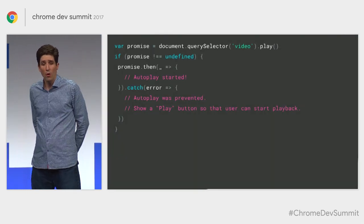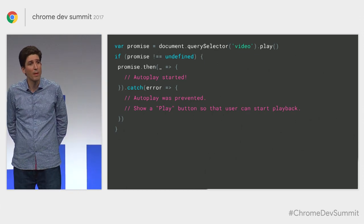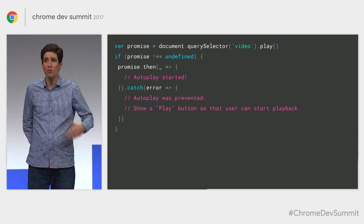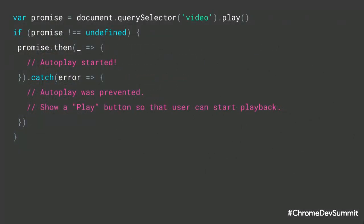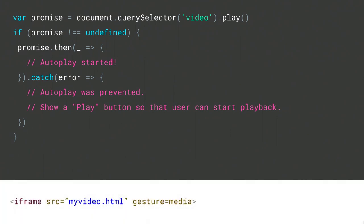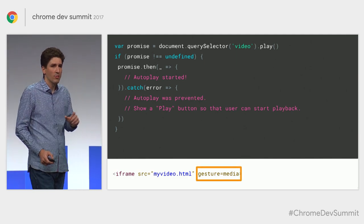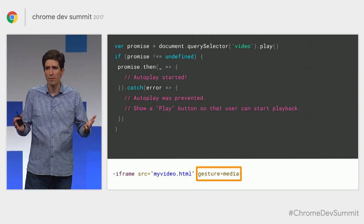In terms of code, to detect whether or not autoplay is allowed, you can do this by checking the play promise after you try to play media with audio. If the promise is rejected, then you know that only muted autoplay is allowed. iframes can always do muted autoplay, but the site can grant permission to access the site policy using an attribute — the attribute name is not yet finalized but will be something like gesture equals media.